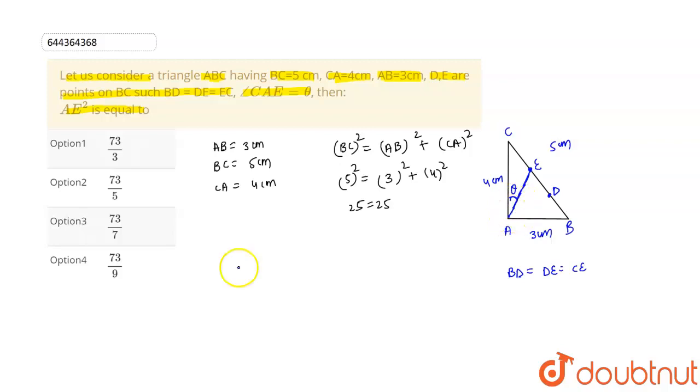Now in triangle ACE use cosine rule. By cosine rule we can see that cos C is equal to AC whole square plus CE whole square minus AE whole square divided by 2 AC into CE.